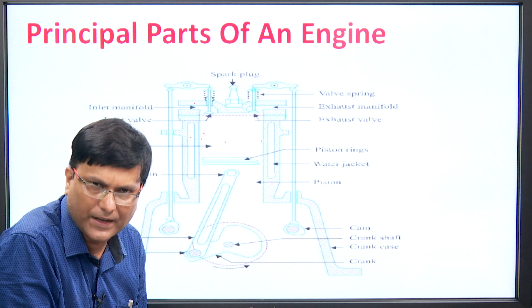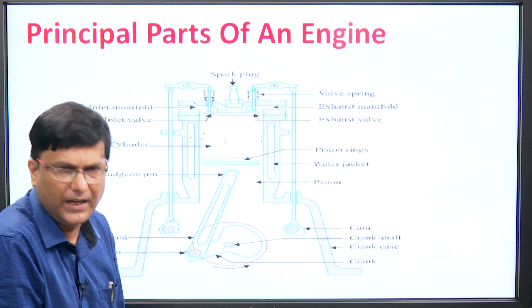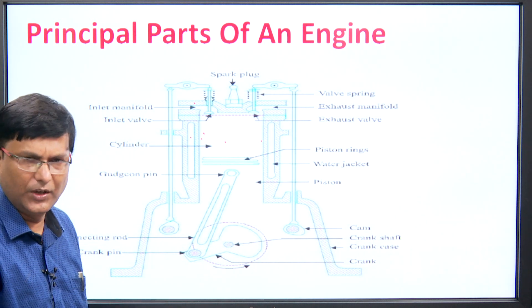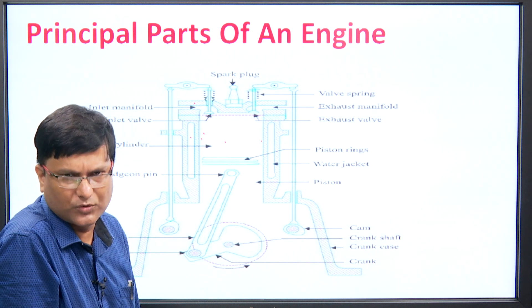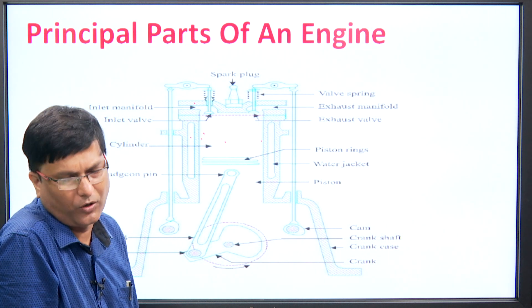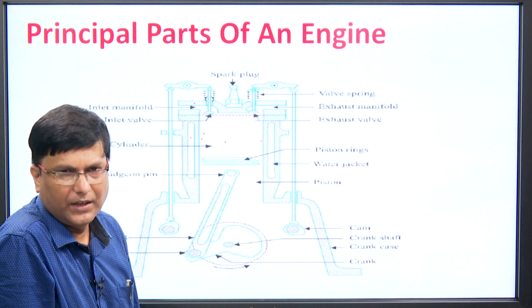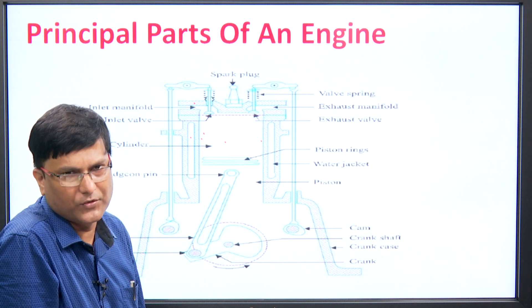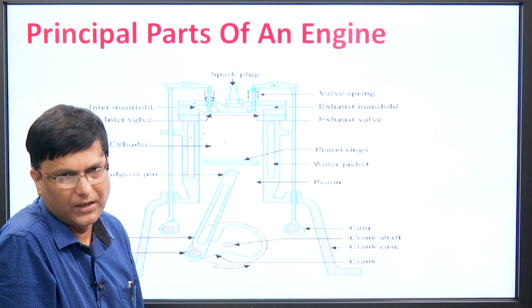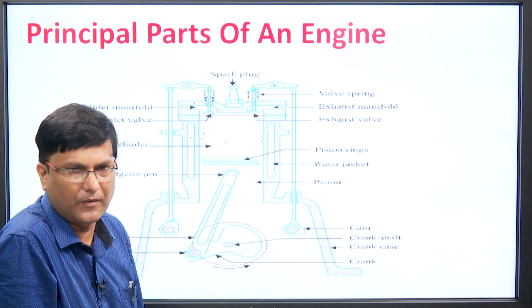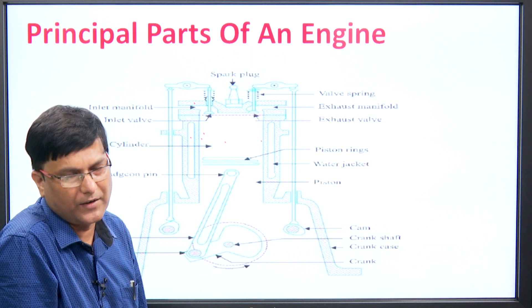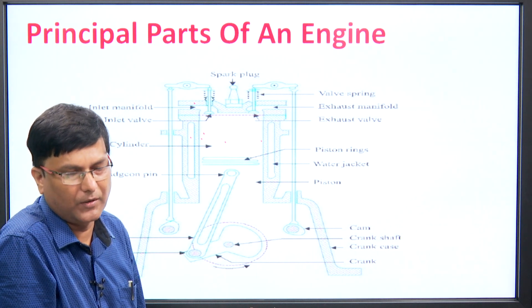We know what an IC engine is — let us just have a small recap. It can be classified as a two-stroke engine or a four-stroke engine. In case of a two-stroke engine, for every one revolution of the crank we get one power stroke. In case of a four-stroke engine, for every two revolutions of the crankshaft we get one power stroke.